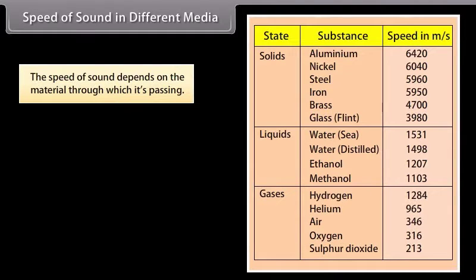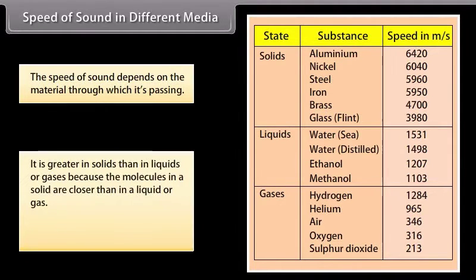Speed of sound in different media. The speed of sound depends on the material through which it is passing. It is greater in solids than in liquids or gases because the molecules in a solid are closer than in a liquid or gas. In this table you can find the speed of sound in different media at 25 degrees Celsius.